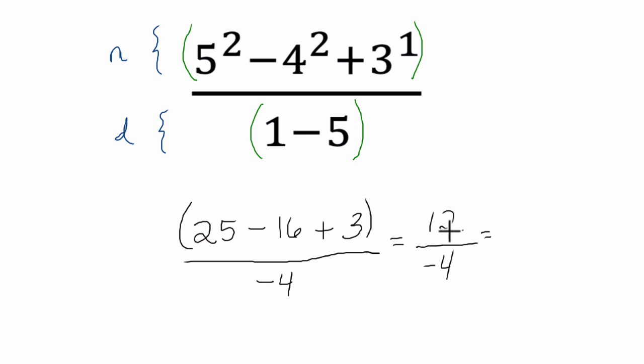And here I just think, well, I know 12 divided by 4 is 3. So 12 divided by negative 4 is the opposite. It's negative 3. All right. I hope this helps.